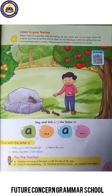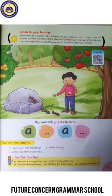Let's read the story. Akbar went to a garden with his family. He saw apple and apricot trees there. His mother told him to be thankful to Allah for his blessings in the form of food. He saw ants working hard in a team. He promised his mother to work hard in his life.